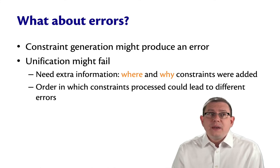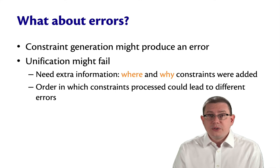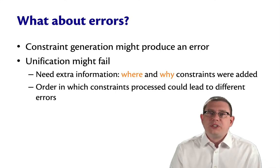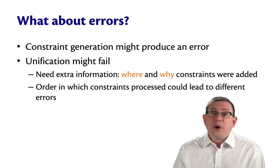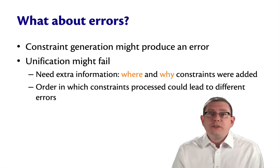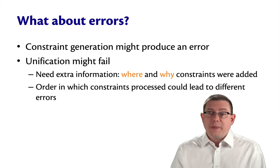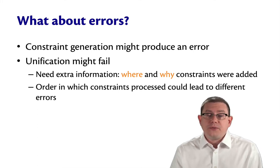And by the way, the order in which constraints are processed could lead to different errors. In fact, we've already seen that you can get different substitutions out, so that's maybe not surprising. It's an ongoing area of research how to give programmers really useful error messages when this kind of unification fails during the middle of inferring types.